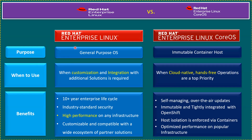The first point is the purpose. RHEL is a general-purpose operating system — a versatile OS for various apps. It can be used for normal monolithic applications, tier-based applications, and also container-based applications. But when it comes to Enterprise Linux CoreOS, this is an immutable container host. Immutable means it cannot be modified or edited — it's a completely fixed container host OS, released mainly for the OpenShift container platform, optimized for containerized apps providing a lightweight and immutable platform for container orchestration.